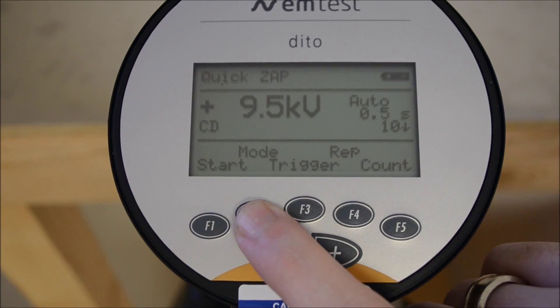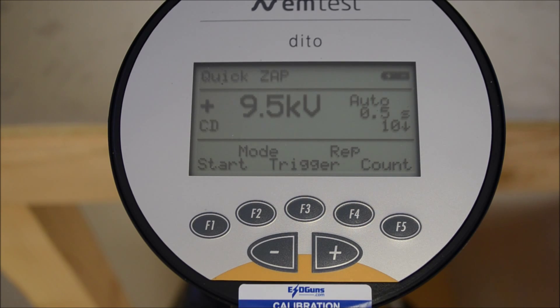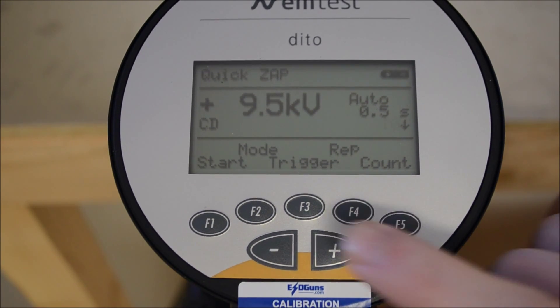Returning to the main menu, F2 takes us into quick zap mode. We'll deactivate the preset counter by pressing F5 and scrolling down until the counter displays 0.